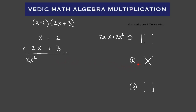Step number two, we're going to do our crosswise pattern. So that's going to be X times three plus two times two X. X times three gives us three X, and two times two X gives us four X. Three X plus four X gives us seven X. So our middle term is plus seven X.